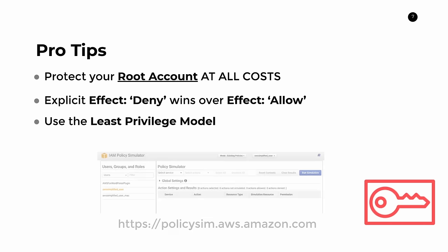My final tip is to use the IAM Policy Simulator when debugging problems with your policy statements. This tool is offered through AWS and integrates directly with your account. You can select a user, choose a service and an action, and see if you have access to that combination. If you don't, the tool tells you exactly which part of the policy statement is preventing access. It's super handy when you have large policy documents and aren't sure where things are going wrong. Now, to recap everything quickly: